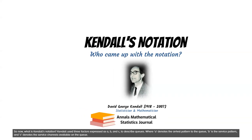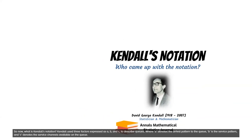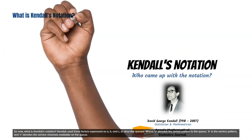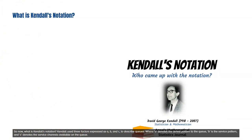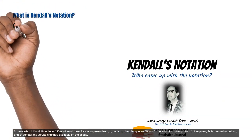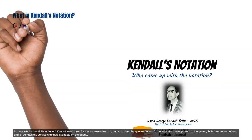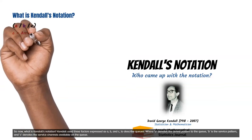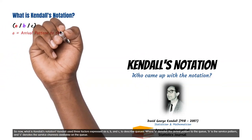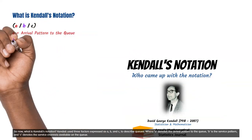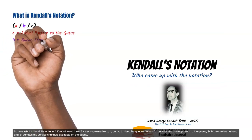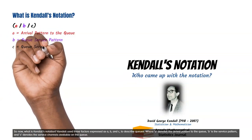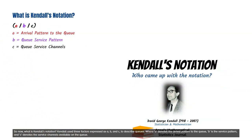So now, what is Kendall's Notation? Kendall used three factors expressed as A, B, and C to describe queues, where A denotes the arrival pattern to the queue, B is the service pattern, and C denotes the service channels available on the queue.